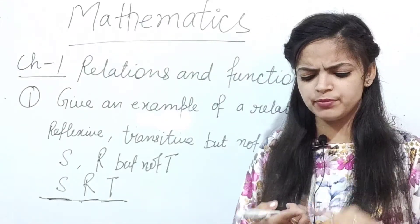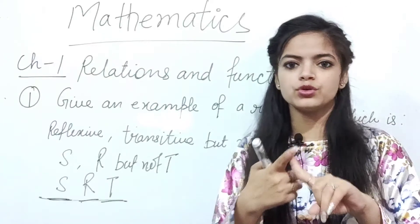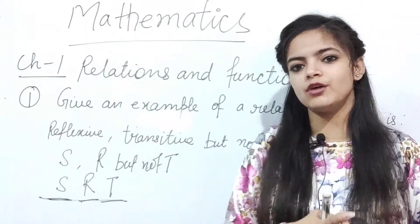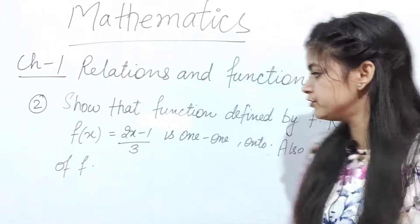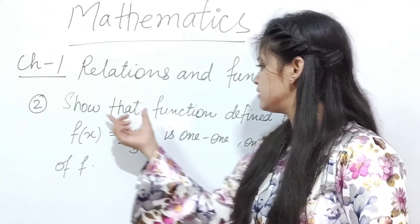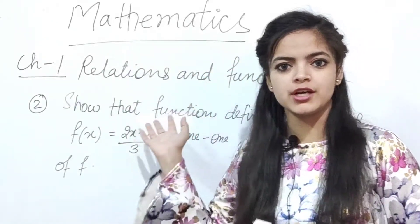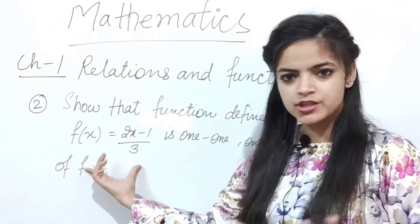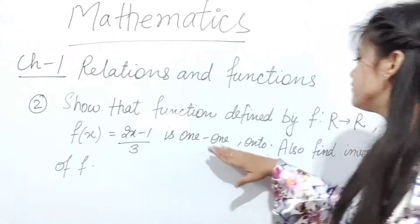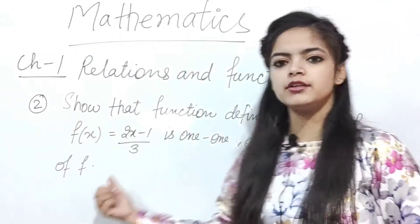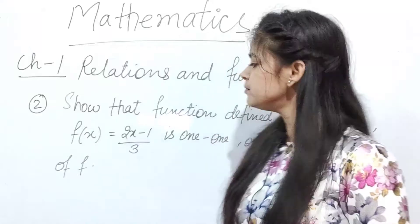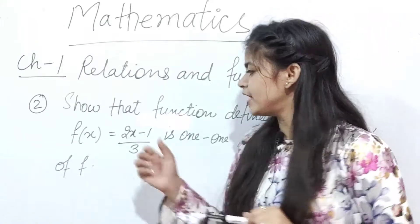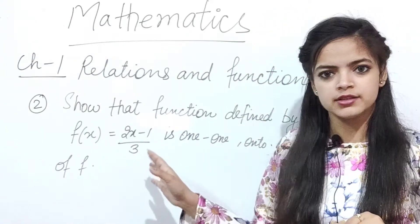Now come to Functions. In functions, you should simply know two things: one-one function and onto function. You should know what one-one and onto mean. Here we have an example of a question from this chapter: show that the function defined by some given value is one-one and onto, and also find the inverse of f.